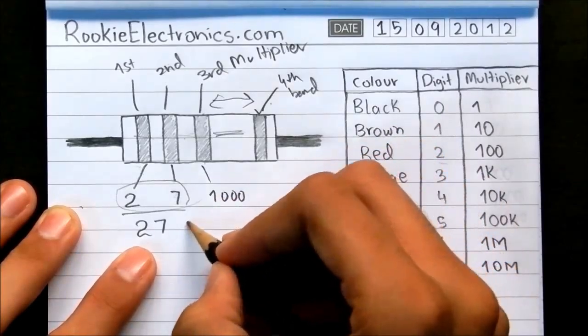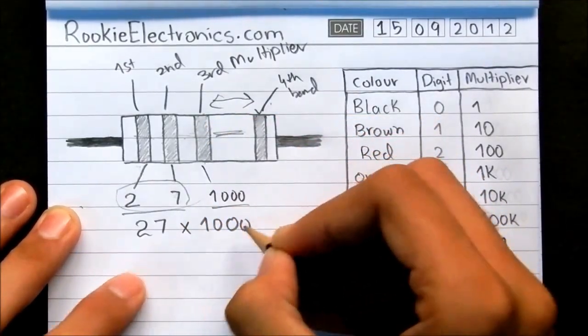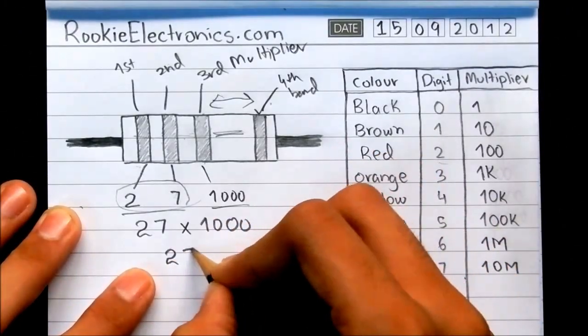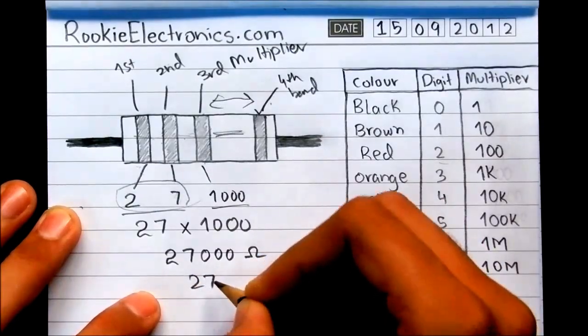And then it is multiplied to this, the 3rd band, which is 1000. So the value becomes 27,000 ohms or 27k.